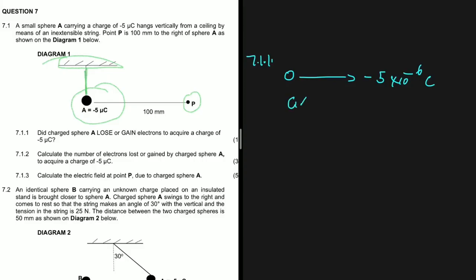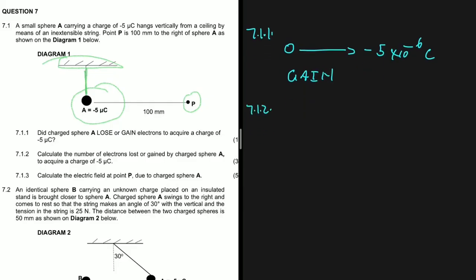So for 7.1.1, this sphere definitely gained electrons.